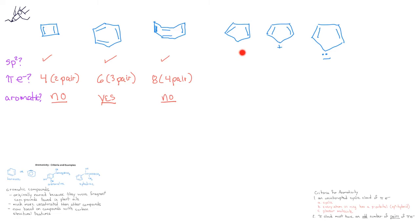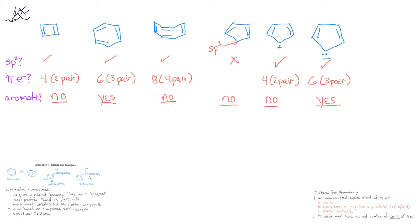We could also look at cyclopentadiene and its positive and negative anion derivatives. Cyclopentadiene itself would not be aromatic because one of the carbons in the ring is sp3 hybridized instead of sp2. The cation has all of its 5 carbons sp2 hybridized; however, we only have 4 pi electrons, or 2 pairs of pi electrons. And so since 2 is an even number, the cyclopentadiene cation is not aromatic. When we look at the anion of cyclopentadiene, we see that we do have 6 pi electrons. Since that's equivalent to 3 pairs of pi electrons, the cyclopentadiene anion would be aromatic.